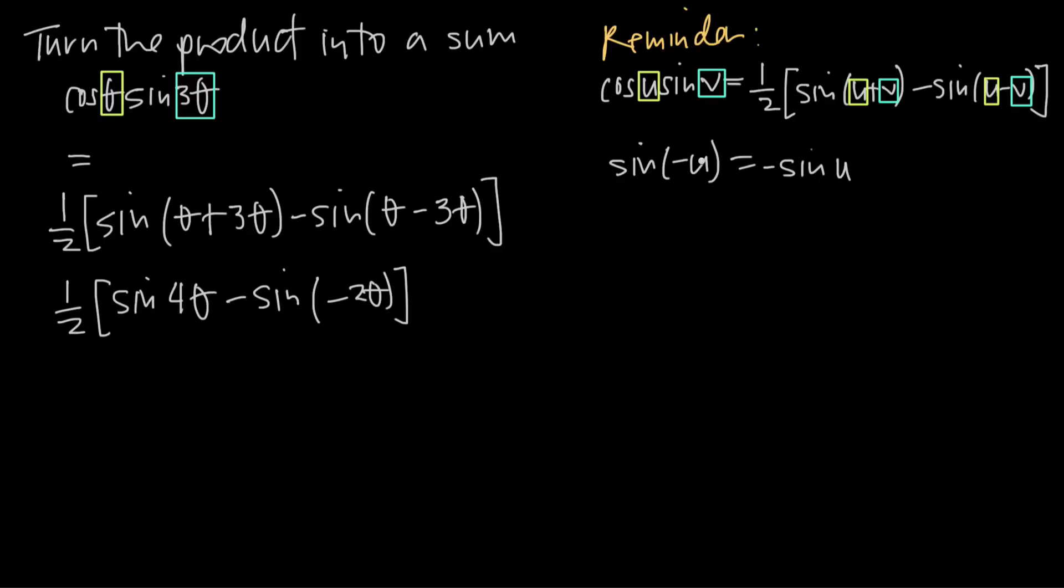So when I have a negative angle on a sine function, I can just pull that negative sign out in front. So I can take this negative sign, bring it out in front of the sine function, and the negative times the negative is going to be a positive.